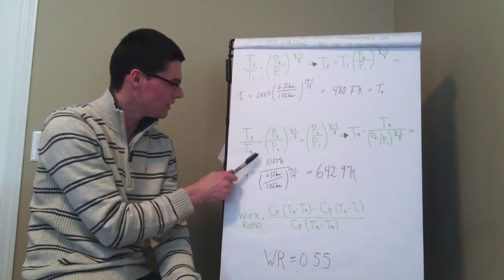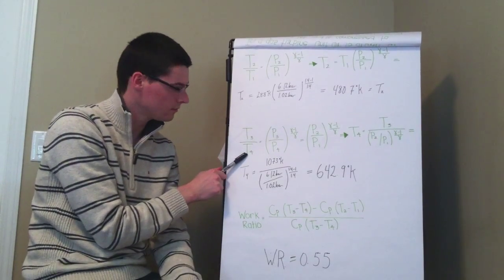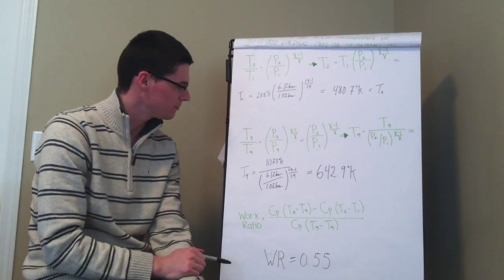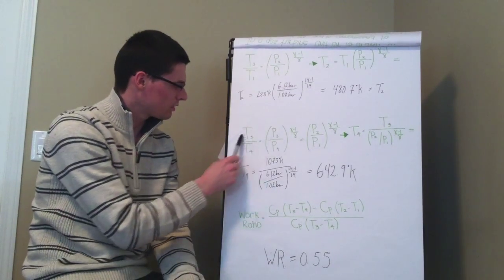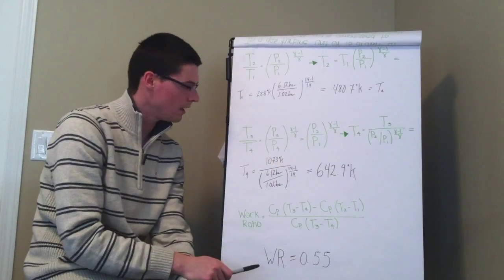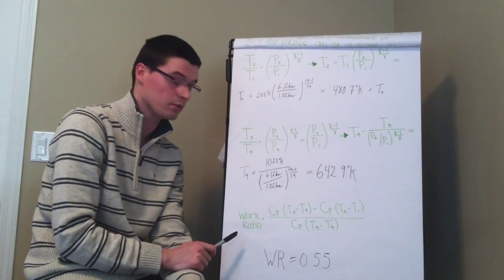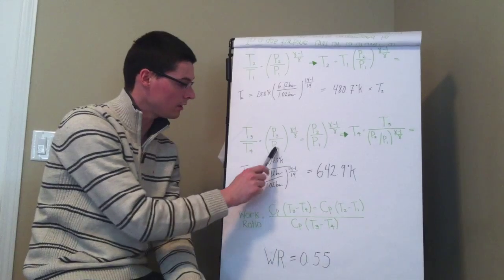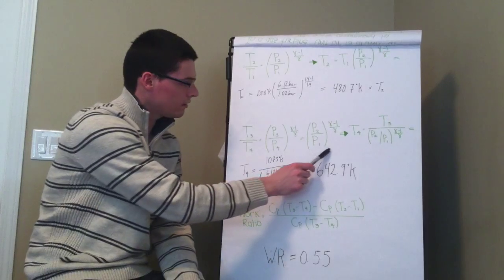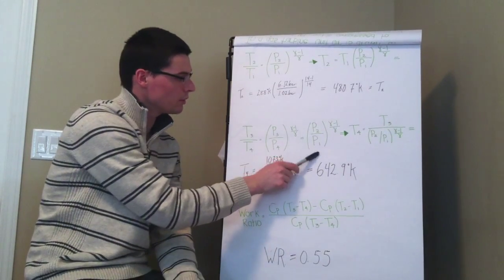So now we have T3, but we need to find T4. This is all for getting the work ratio, which we'll get to in a minute. So we'll still use our relationships here, but we're going to remember the isobaric processes, where P3 is actually equal to P2. They're along the same line, as well as P4 equals P1. So then we get that T3 over T4 equals to this relationship right here.